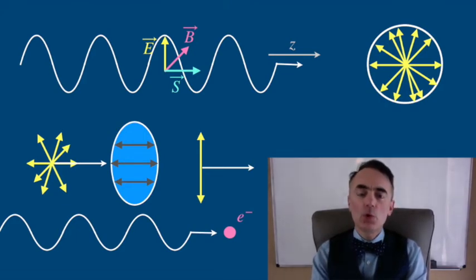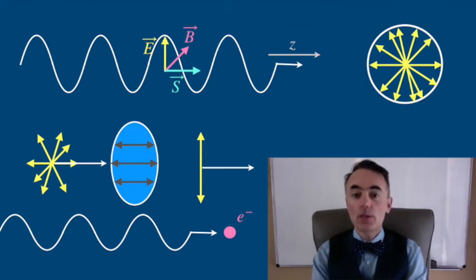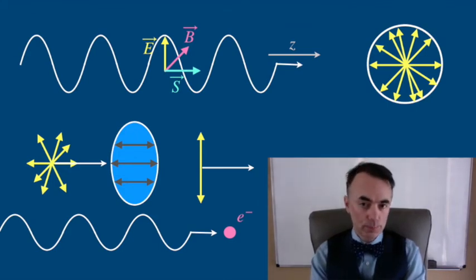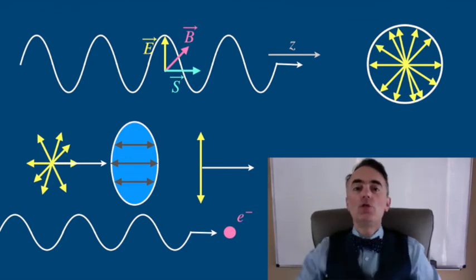A dichroic material absorbs light polarized in a specific direction of the dichroic material and allows the perpendicular direction to move on.